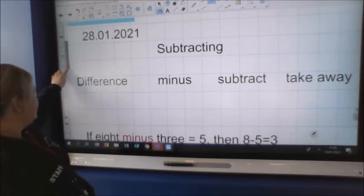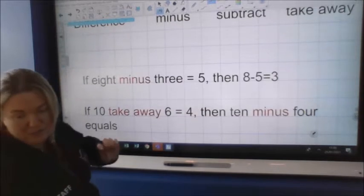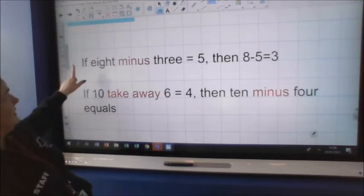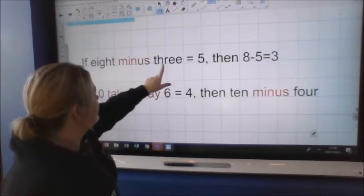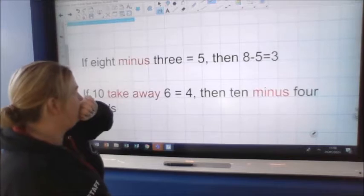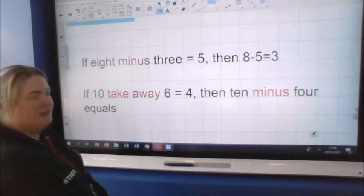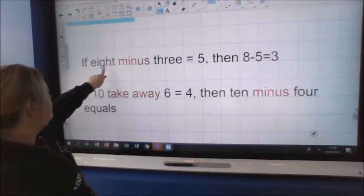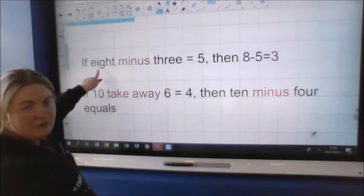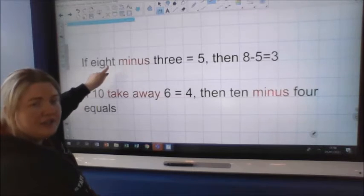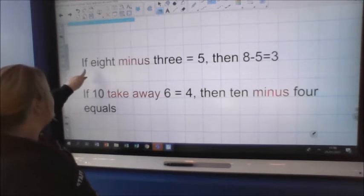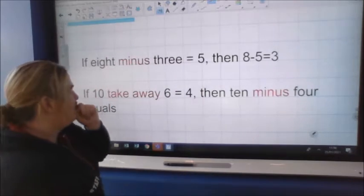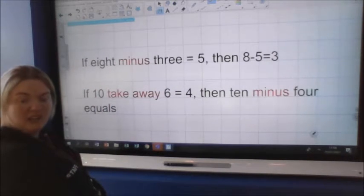Right, then let's have a look at what we're going to do. So the first thing we're going to do is have a look at number sentences. So here we have, if eight minus three equals five, then eight take away five equals three. We know that says eight because we were looking just before we broke up for the lockdown at writing our numbers in the written form. Fantastic.